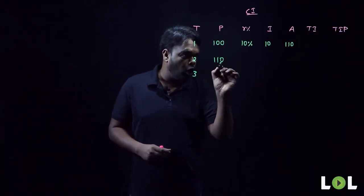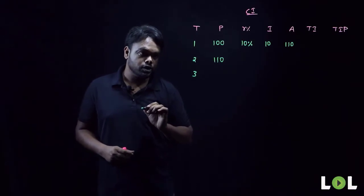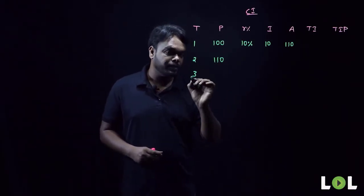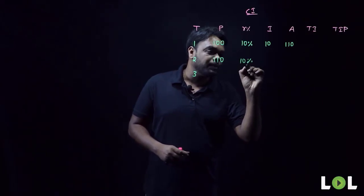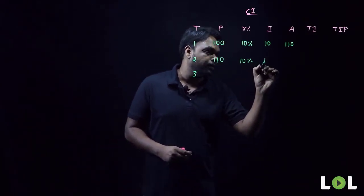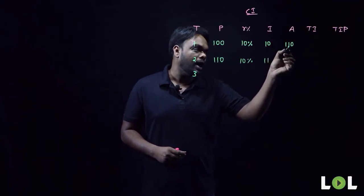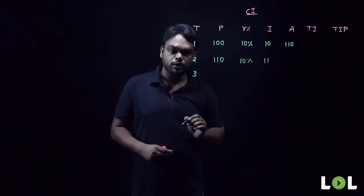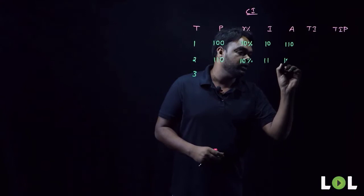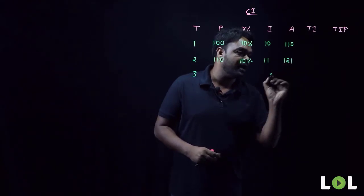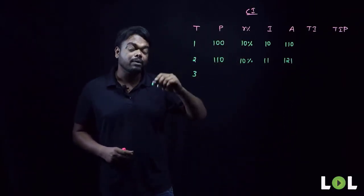In compound interest, the rate of interest is always applied on the principal along with the previous year's interest. So 110 rupees is the new principal. 10 percent of 110 is 11 rupees. First year I already owe you 110, this year 11 rupees interest, so altogether I have to pay you 121 rupees at the end of the second year.